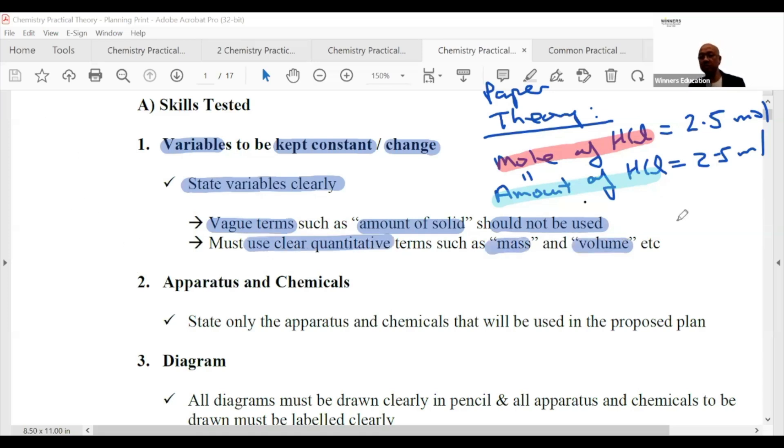Use terms like mass, volume, mole, or concentration. For apparatus and chemicals, state only the apparatus and chemicals that we use in the proposed plan. Don't give extra. Whatever you use, you must use a diagram.